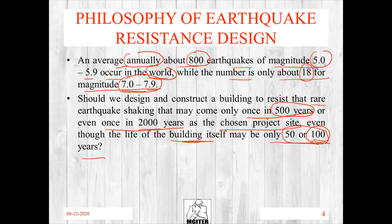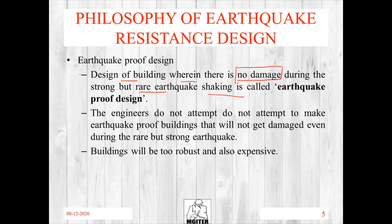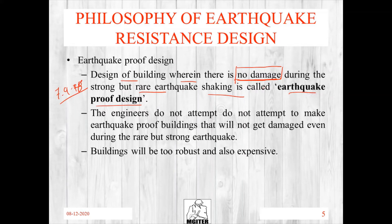We have two types of earthquake resistance design: first is earthquake-proof design, and second is earthquake-resistance design. Earthquake-proof design means a building where there is no damage during a strong but rare earthquake. While a building resists a magnitude 7 or 7.9 earthquake, there is no damage in the building — no structural failure. That is earthquake-proof design.